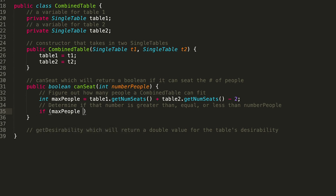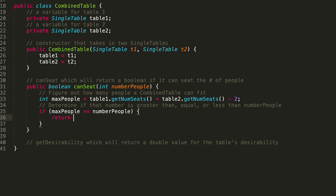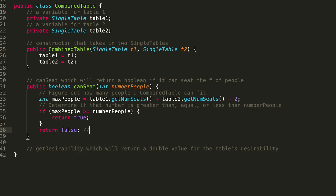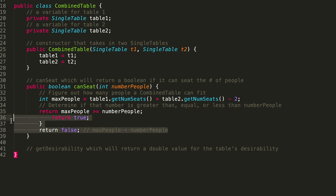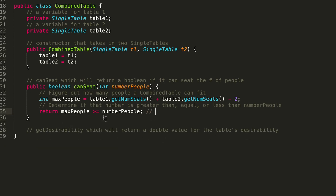Now we need to determine if maxPeople is greater than or equal to the number of people. For example, if five people want to be seated and maxPeople is five, we're good. If maxPeople is five but we only need four seats, we're also good. So if maxPeople is greater than or equal to numPeople, we can seat everyone. We can simplify this with: return maxPeople >= numPeople. That's the canSeat method.